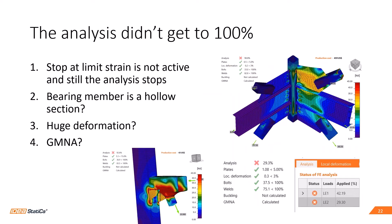What if the stop at limit strength is not active but the analysis still stops at a certain percentage? You check your code setup, it's not active, but you get results like 92% or 29%. Then you observe that your bearing member is a hollow section and you have a large deformation in the check tab. In this case, the best guess is that it will be an instability issue.